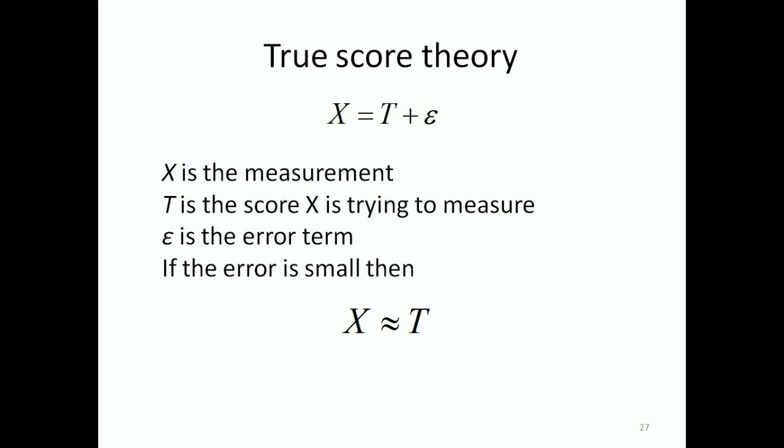So the idea is that x is a measurement of t which is the true score and that we can expect there to be some measurement error, epsilon.